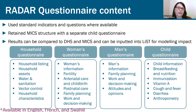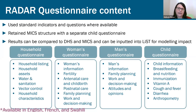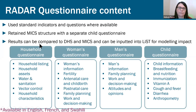The questionnaire content uses standard indicators and questions where possible. For those familiar with DHS and MICS, we used a MICS structure with a separate child questionnaire. This structure is easier to adapt — if you're not working in child health, you can simply drop the child questionnaire with no impact on the other questionnaires. It also allows inclusion of children whose biological mothers aren't living in the household, unlike DHS, and doesn't require a full birth history. Results are comparable to DHS and MICS and can be inputted into LiST for modeling impact.